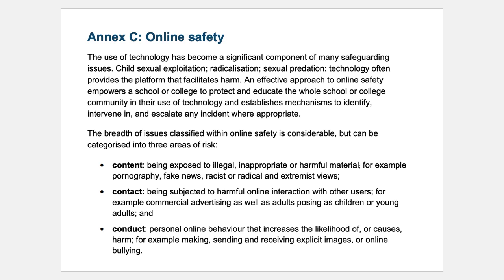The Three C's cover content, contact and conduct. Content is around the kinds of things young people are seeing online — how do they know if it's appropriate or legal, and what do they do if they come across problematic material? This really impacts on school filtering systems, which need to filter out truly offensive content, but there's also been a lightening up around filtering so that children aren't completely locked in what they see, and do know what to do if they encounter something inappropriate.